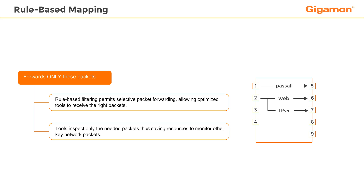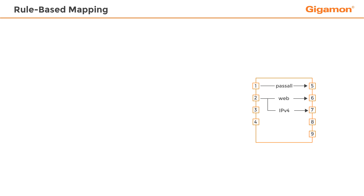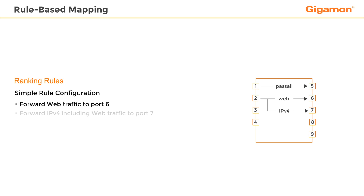By focusing all of its capabilities on the right traffic, the tool can be used to monitor or protect more of the network. When rule-based mapping is applied, the priority ordering of map rules can cause significant differences in the outcome.